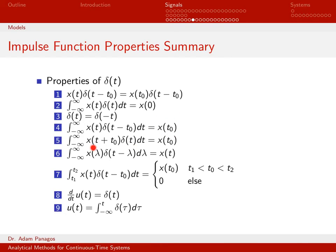Something very similar happens if I've time-shifted x of t plus t0. This is an impulse at time t equals zero, so I end up with whatever this signal is with t replaced by zero — so if t is zero, I'm just left with t0 and I get x of t0. Number six says it doesn't really matter what you call the integration variable. Usually we think of it as time t, but if I think of it as t, lambda, or alpha, all the math still holds.